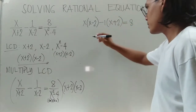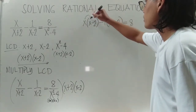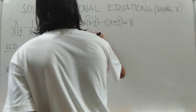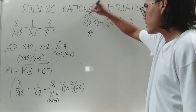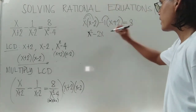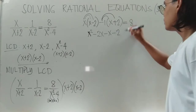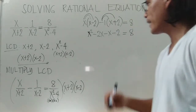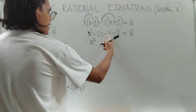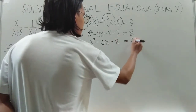We have to follow the distributive rule. Distributing the quantity (x minus 2) times x: x times x is x squared, and x times negative 2 is negative 2x. Then negative 1 times x is negative x, and negative 1 times positive 2 is negative 2. Bring down equals 8. Combining like terms: x squared minus 2x minus x gives us x squared minus 3x minus 2 equals 8.